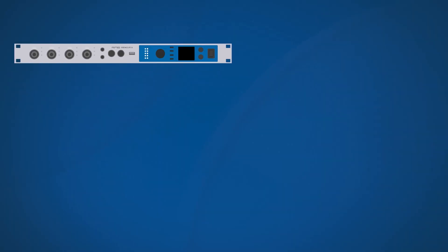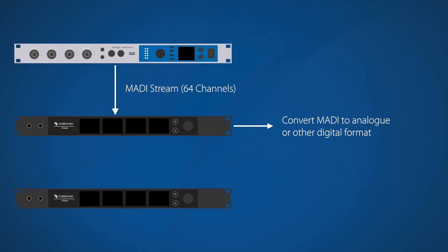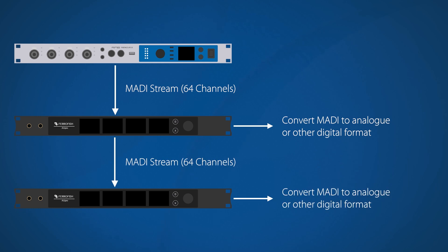As mentioned, MADI devices can be daisy-chained, combining each device's audio channels into a single MADI stream. This allows connecting multiple devices in series — two 32-channel devices or four 16-channel devices — to access the full 64 inputs in recording software. You can send all 64 channels out of an interface into the first device, select a set of channels to convert to analogue or another digital format, and forward the MADI stream on to the next device, and so on.